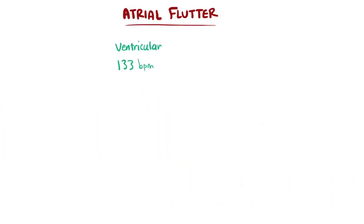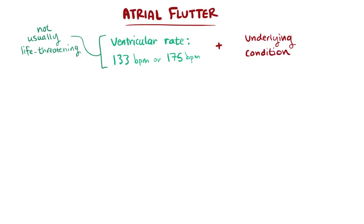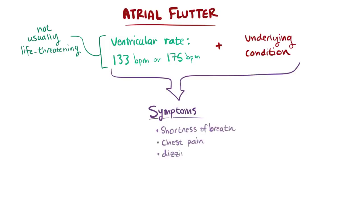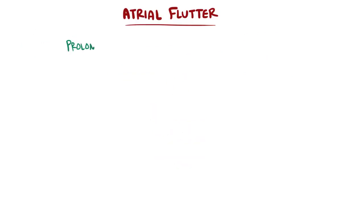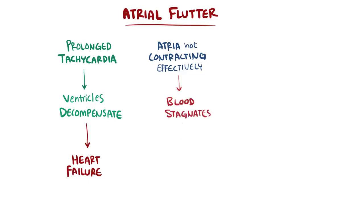Having higher ventricular rates like 133 or 175 beats per minute isn't usually life-threatening. But if it's happening at rest, it's generally not something most people want to experience. If somebody has an underlying condition where they aren't able to physically tolerate high ventricular rates like this, they might feel symptoms like shortness of breath, chest pain, dizziness, and nausea. Over time, from prolonged episodes of tachycardia, the ventricles can tire out and decompensate, and people can develop heart failure. Also, since the atria aren't contracting very effectively, blood tends to stagnate or pool in the atrium, and this can lead to formation of blood clots that can embolize to the brain and cause a stroke.